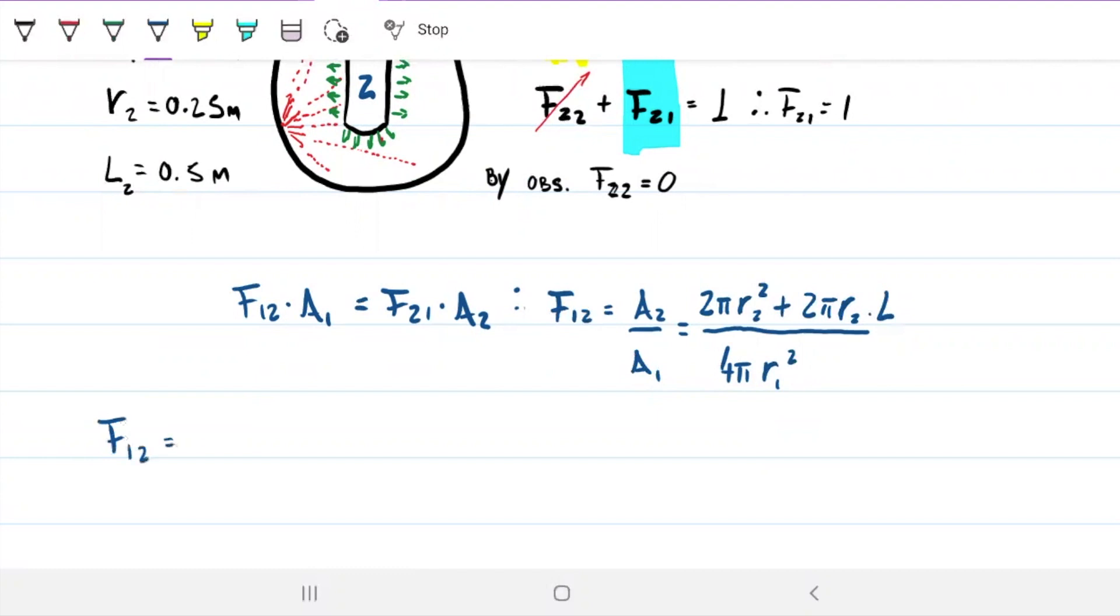Note that we have everything we need to be able to solve that. So F12 equals, I'm going to go ahead and eliminate some things. Pi, we have pi everywhere. And then we have 2, 2, and 4, which we'll just transform into 2 there. So this is saying that 0.25 squared plus 0.25 times 0.5 divided by 2 times 0.5 squared equals my view factor F12. And this turns out to be 0.375.